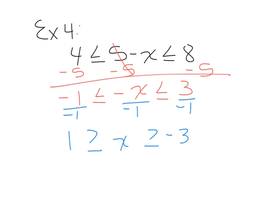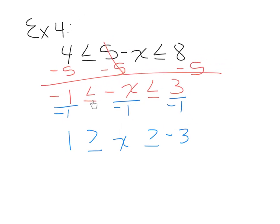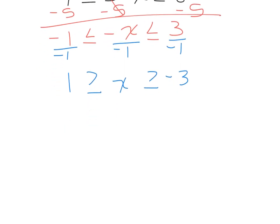It's standard to write compound inequalities with less than rather than greater than. To convert: switch the two outer numbers. Since 1 is greater than x means x is less than 1, and x is greater than negative 3 means negative 3 is less than x, flipping the two numbers changes the direction to less than. The result is: negative 3 is less than or equal to x is less than or equal to 1. That's our solution.